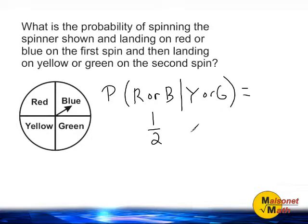And the probability of landing on yellow or green on the second spin is also one half, because yellow and green occupies half of our spinner.